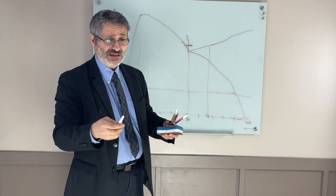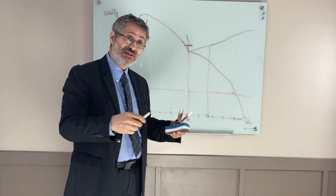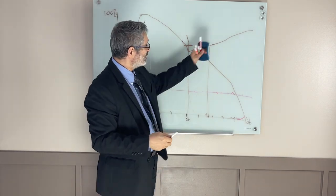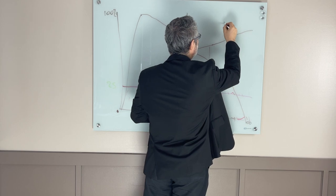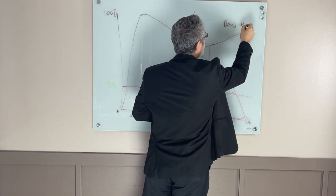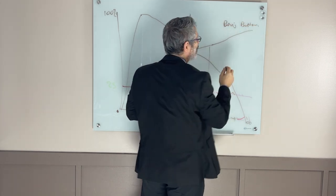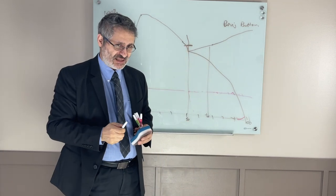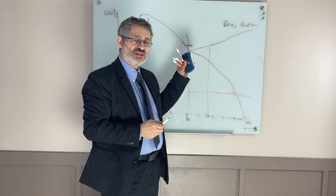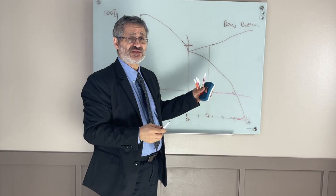We have a name for that curve, we call that the Benjamin Button curve, from the movie, that this person is born old, but he gets young with age. This is the Benjamin Button curve.